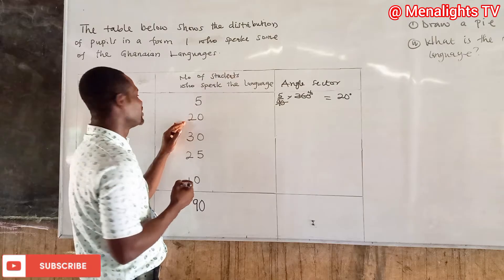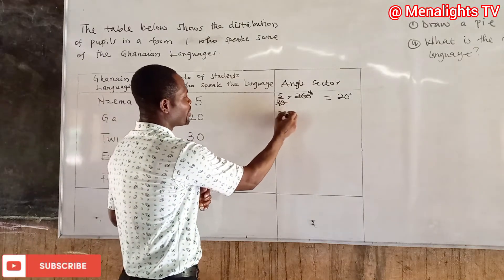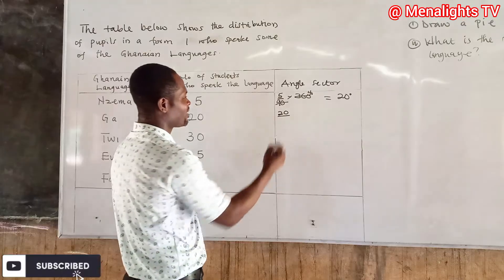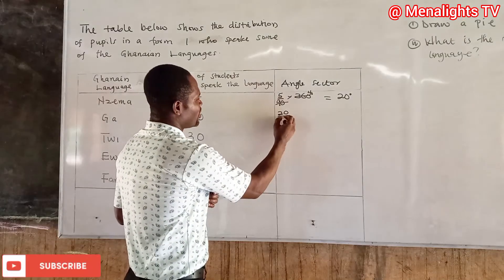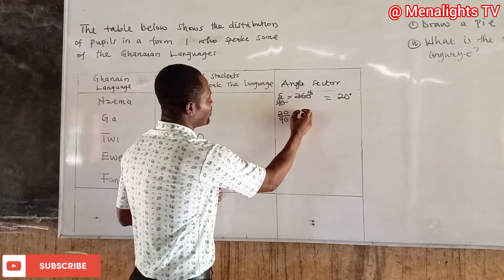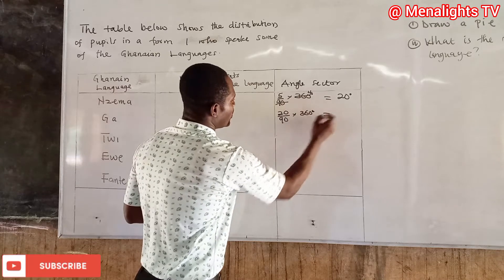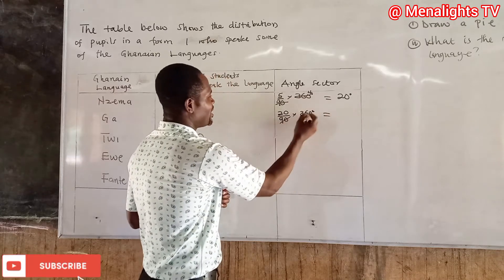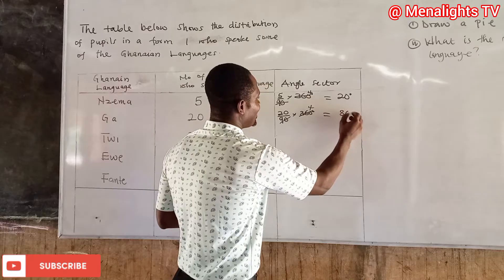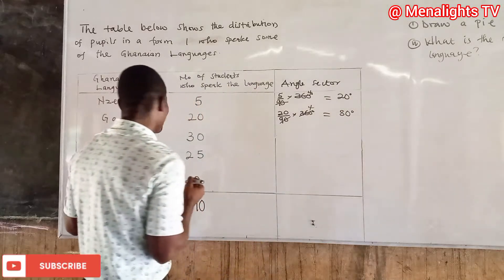The second language is Ga. We have 20 people speaking Ga out of the total 90 students. So: (20/90) × 360 degrees. 90 goes into 360 four times, so 4 × 20 gives us 80 degrees.